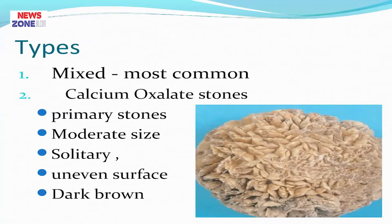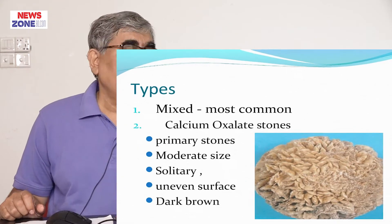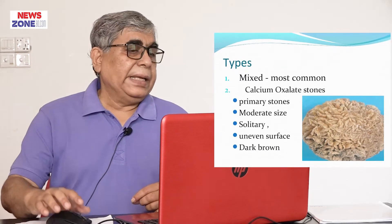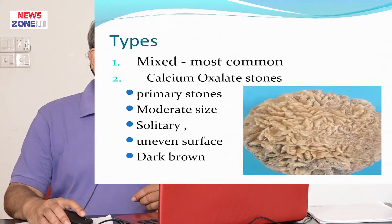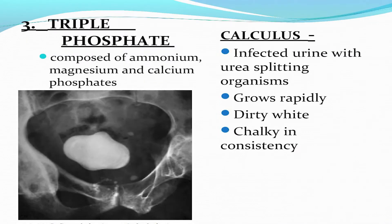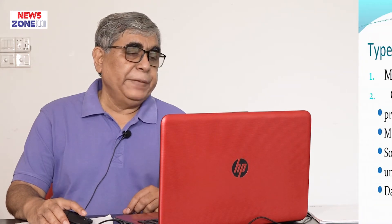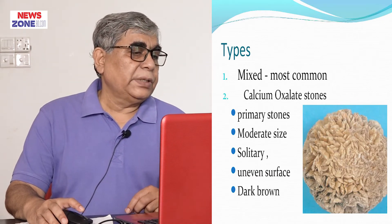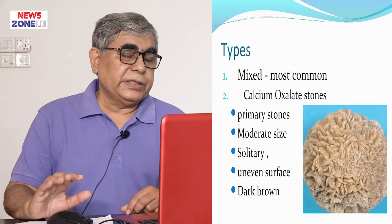The most common type of bladder stone is the mixed stone. Calcium oxalate stone is the next most common. Uric acid stone is another type. Triple phosphate stone and cystine calculi are also recognized types. So the order is: mixed stone first, calcium oxalate second, uric acid, triple phosphate, and cystine.